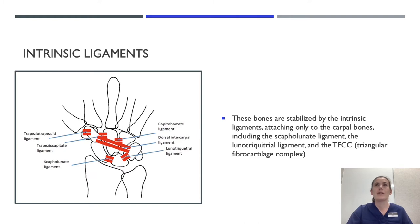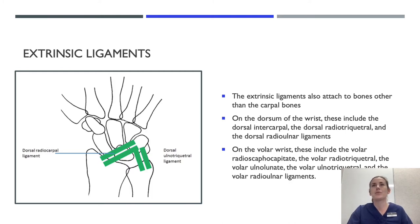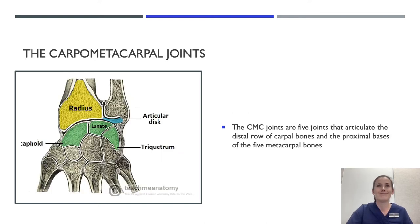These bones are stabilised by the intrinsic ligaments attached only to the carpal bones, including the scapholunate ligament, the lunotriquetral ligament, and the TFCC or triangular fibrocartilage complex. The extrinsic ligaments also attach to bones other than the carpal bones. On the dorsum of the wrist these include the dorsal intercarpal, the dorsal radiotriquetral, and the dorsal radioulnar ligaments. The carpometacarpal joints are five joints that articulate the distal row of carpal bones and the proximal bases of the five metacarpal bones.